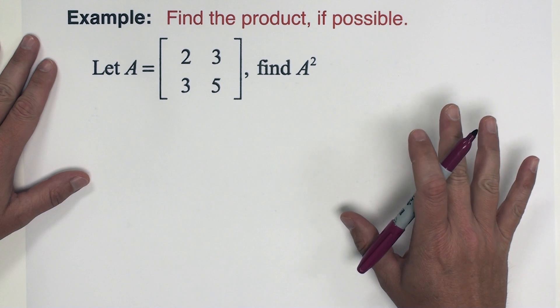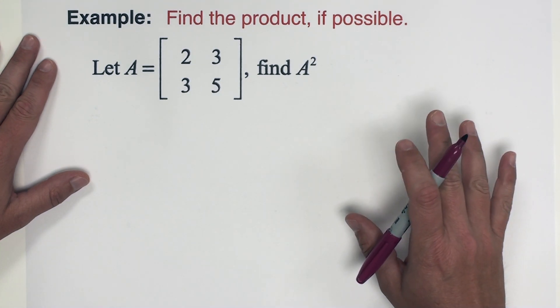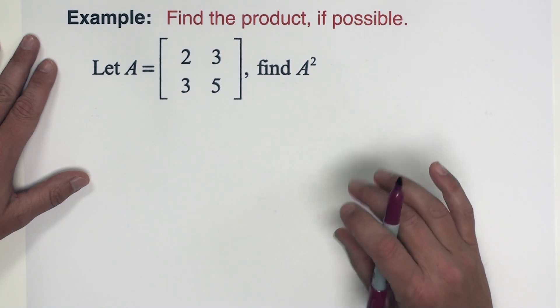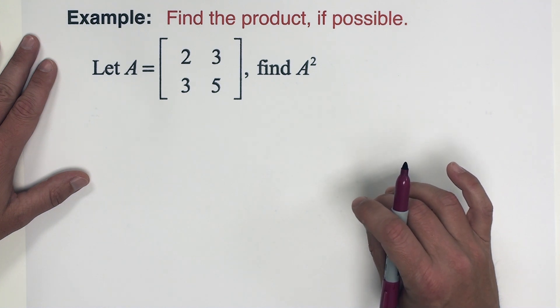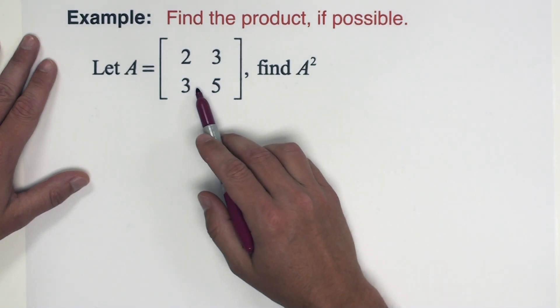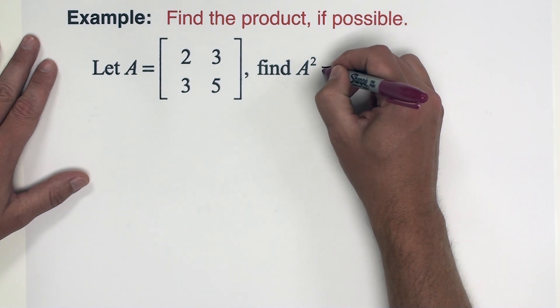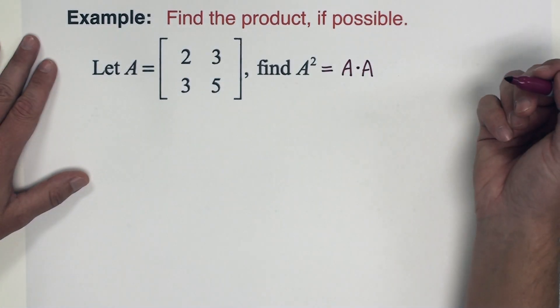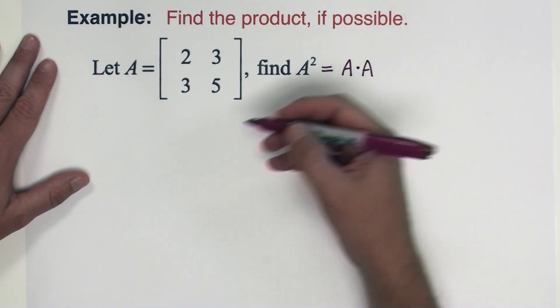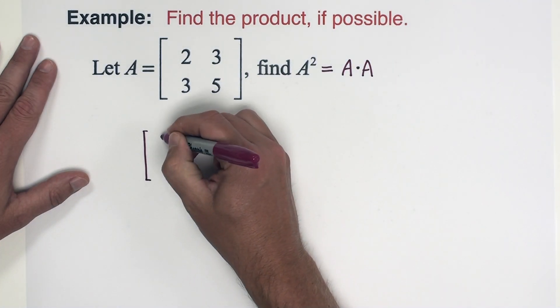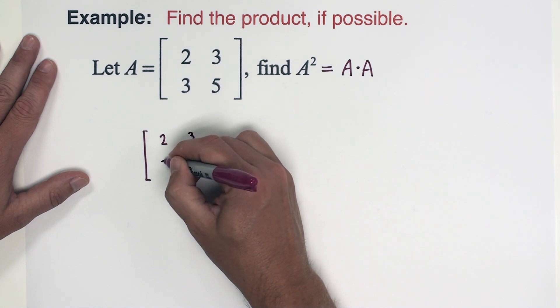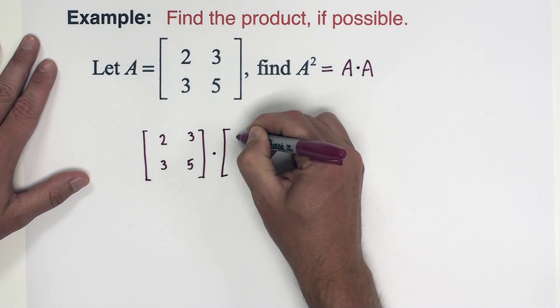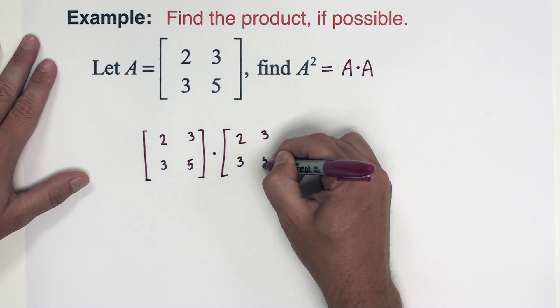If you watched my full video on section 2.2 on matrix multiplication, you would notice that we didn't do an example problem that looked like this. So this one's a little unique to something that I have shown on a video so far. Here we have matrix A and I'm asking you to find A squared. Now we know that A squared means take A times A, want to take the number times itself. So in terms of the matrix, I want to do matrix A, which is [2 3; 3 5] times another matrix A, [2 3; 3 5].